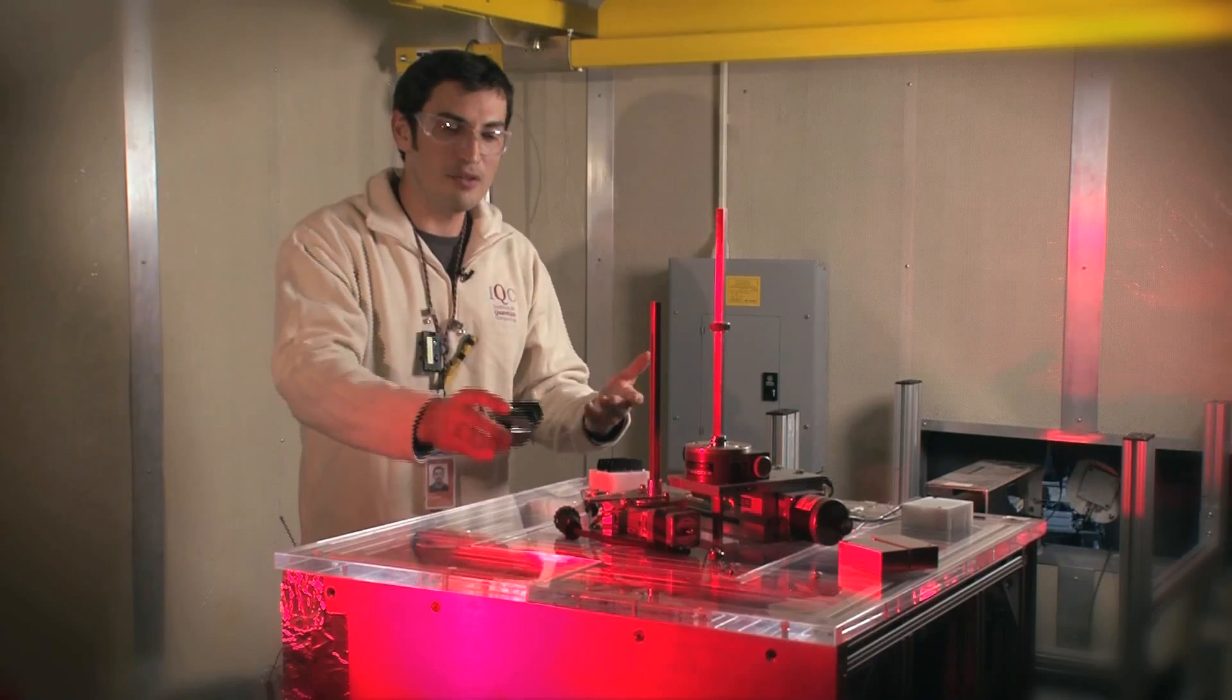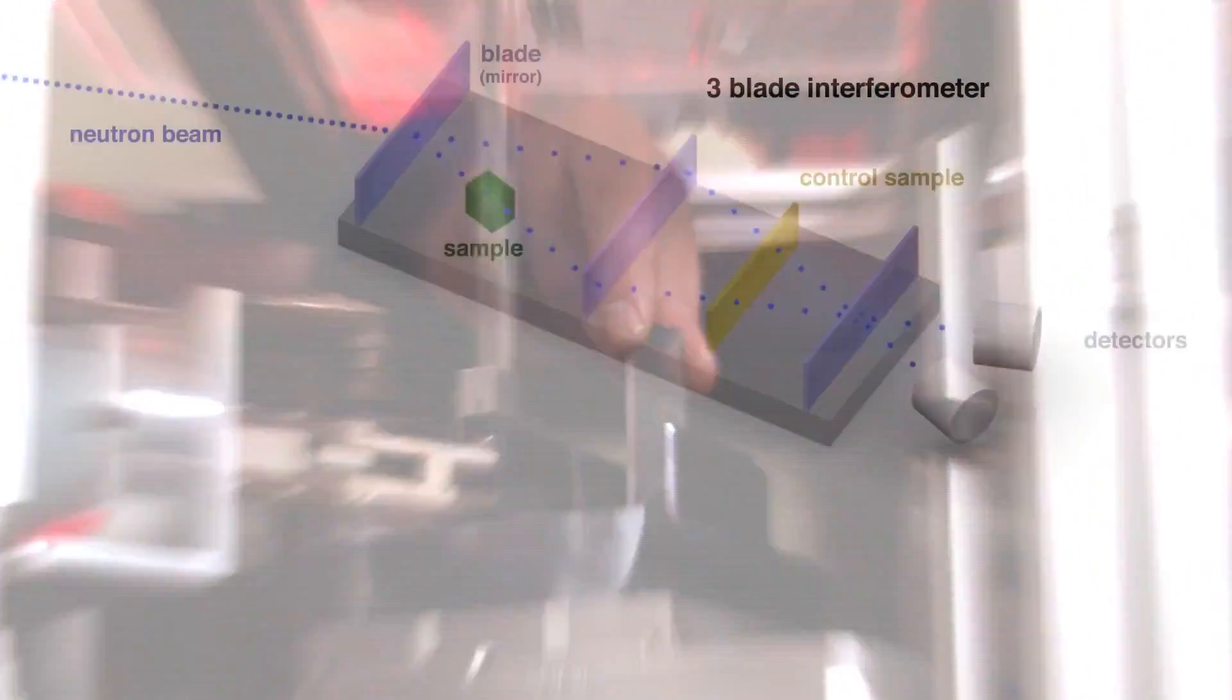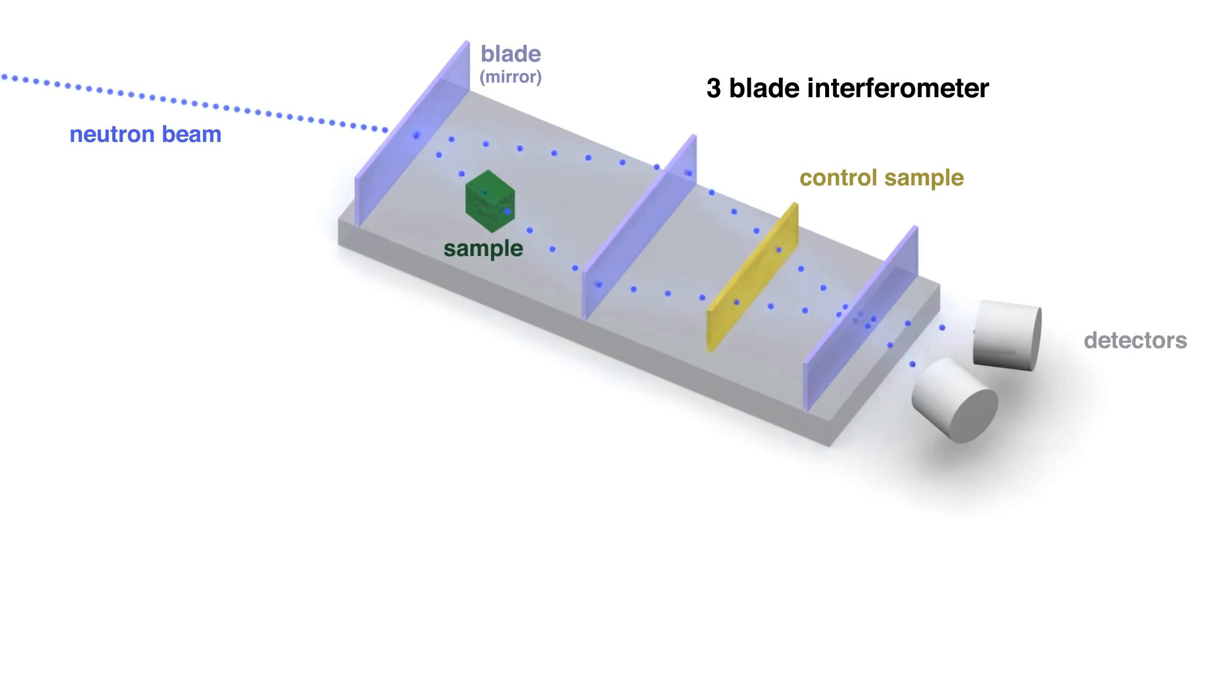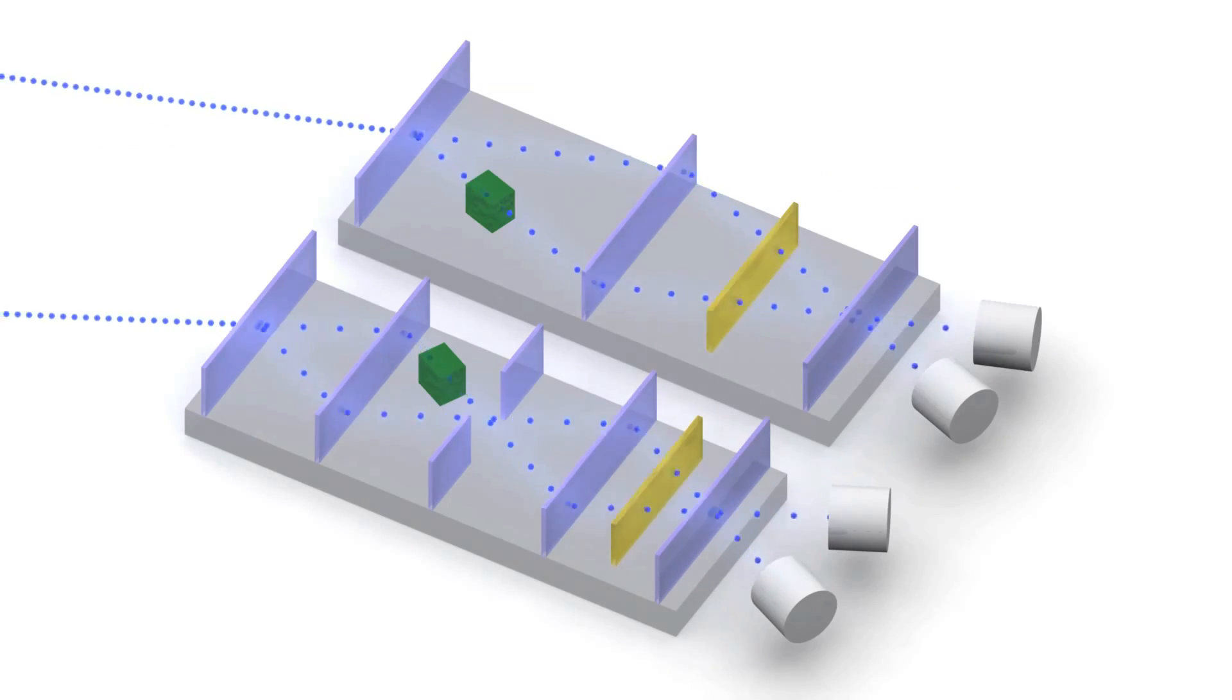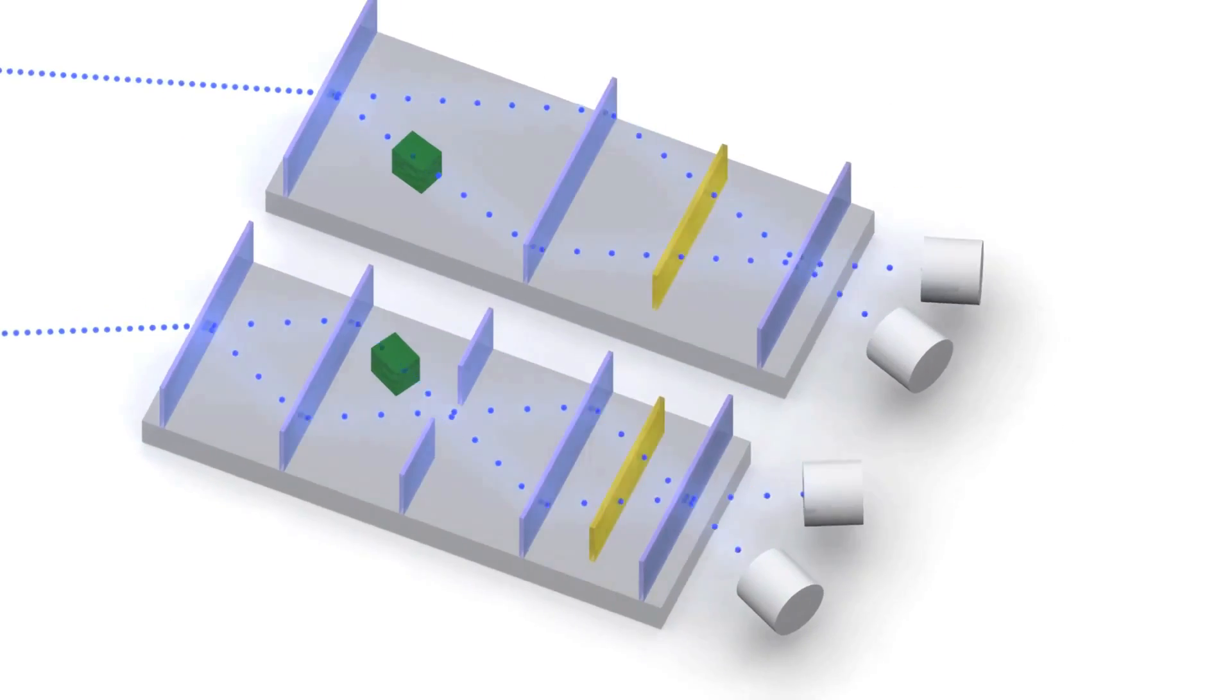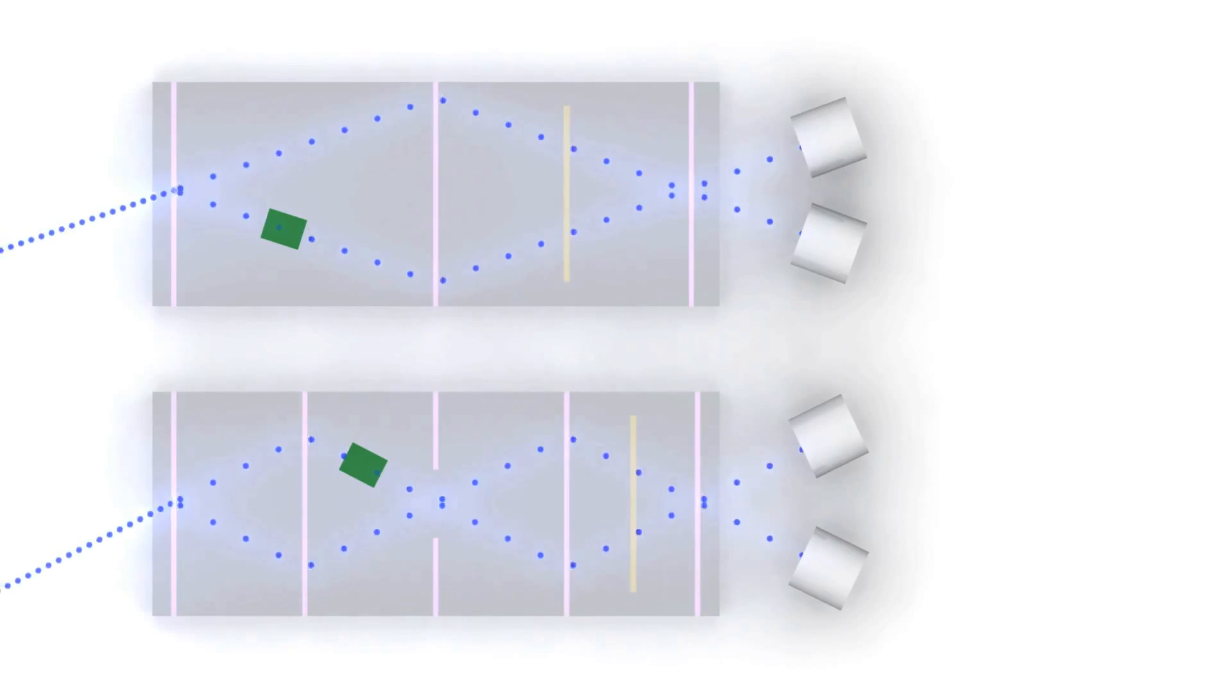The NIST Waterloo team, however, found a novel way to sidestep the problems with the current system. They discovered that the stability of the silicon block could be dramatically increased by simply adding a fourth blade at an optimal location.